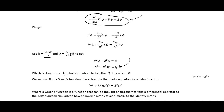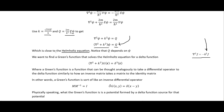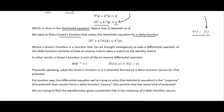This equation is of the form of the Helmholtz equation — if you add one term to both sides you get it equal to zero. We want to find a Green's function that solves the Helmholtz equation for a Delta function source. A Green's function can be thought of analogously as the inverse of a differential operator, similarly to how an inverse matrix takes a matrix to the identity matrix.